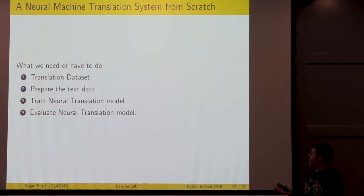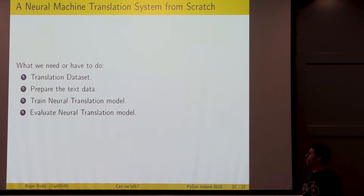As a next step, what I did was implement a neural machine translation model from scratch. We have a couple of steps. First, we need to get a translation data set. I was trying to find a very simple one. Since German is my native language, I used one from there to be able to compare it myself. Then you have to prepare the text data because most of the time the data set is not suitable to be used out of the box. Then train the model and evaluate the model. I went to tatoeba.org to get a tab delimited bilingual sentence pairs data set.